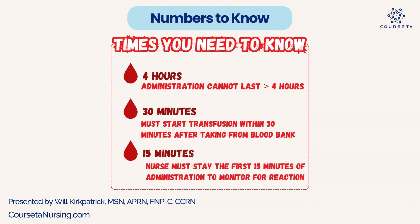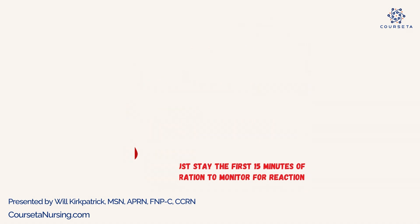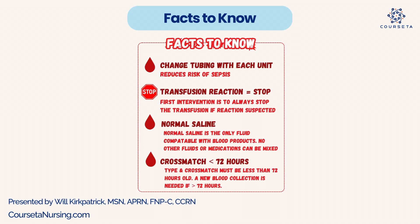Key times to know: four hours — you must administer blood within four hours of starting it. Thirty minutes — you must start the transfusion within 30 minutes of taking it from the blood bank; it cannot be outside the fridge for more than 30 minutes unless started. Fifteen minutes — the nurse must stay for the first 15 minutes to monitor for a transfusion reaction. Also: change the tubing with each unit to reduce the risk of sepsis, and the type and crossmatch must be no older than 72 hours.